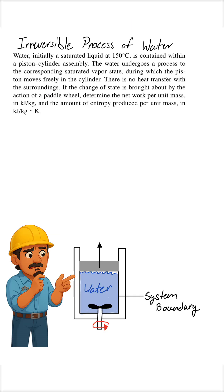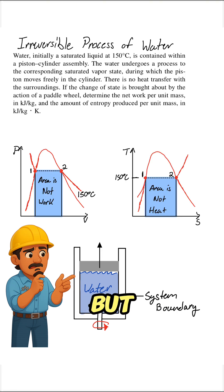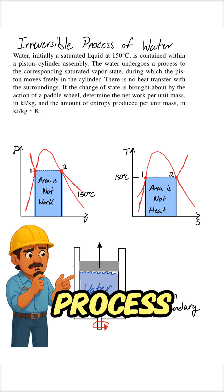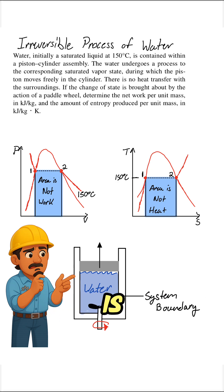Now let's try the irreversible case. Pause and read this problem and see if you can solve it yourself before we go through it. Here, the piston cylinder has the same initial state, but instead of heating, we stir the water with a paddle wheel. There's no heat transfer, but work is added, and because the process is irreversible, entropy is produced.